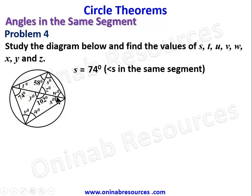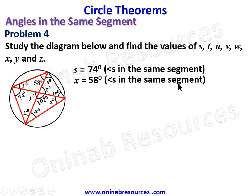Now looking at 58 degrees: this is connected to this chord, and this angle is also connected to the same chord. We can say x is equal to 58 degrees — angles in the same segment. So we have found s and x.